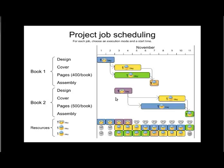On day five the design for Book Two is ready and we could start producing the cover and pages, but both our workers are still busy — one on the cover and one on the pages of Book One. So we have to wait yet another day. Then one worker becomes available and we start making the pages for Book Two, choosing pages first because they take longer — longest job first.